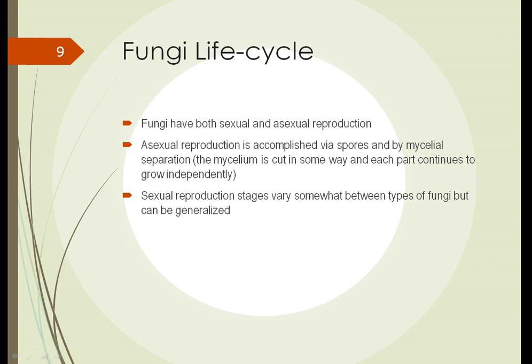Fungi have both sexual and asexual reproduction, like plants in that regard. Asexual reproduction is accomplished via spores or by mycelial separation, in which the mycelium is cut in some way and each part grows independently. Imagine a decaying tree with fungi invading the wood structure — if the tree breaks in half, the mycelia in each part can continue to grow independently.